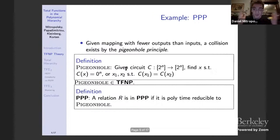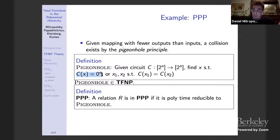Consider the pigeonhole principle: given a mapping with fewer outputs than inputs, there must be a collision. The corresponding computational problem is: given a circuit from n bits to n bits, either find a pre-image of the zero string, or find a collision. This is in TFNP, and we define the subclass PPP as those relations polytime reducible to this pigeonhole problem.